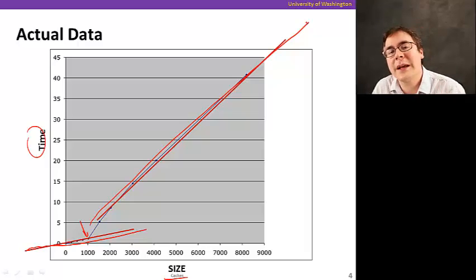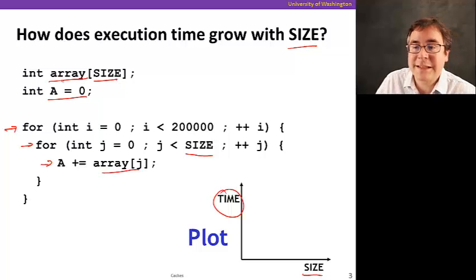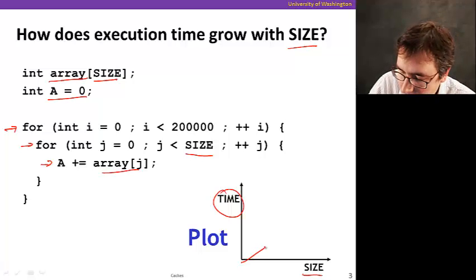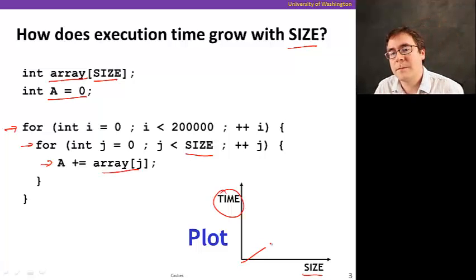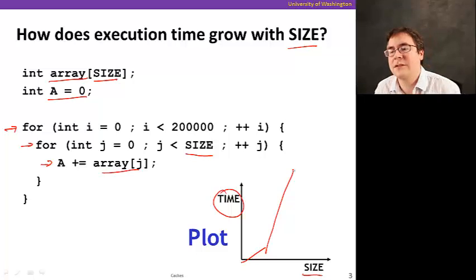And this turns out to be exactly the caches. If the array fits in cache entirely, we're going to have a slope. As soon as it does not fit in cache anymore, we're going to start to have to go to memory more often. Then we're going to have a different curve. We're going to have a different slope.